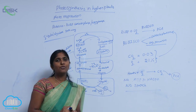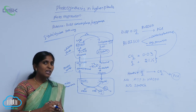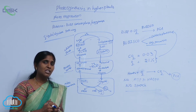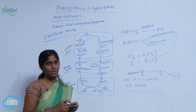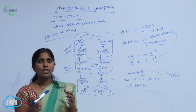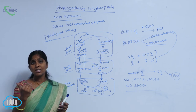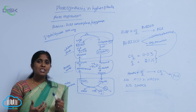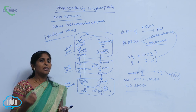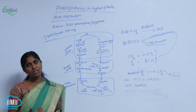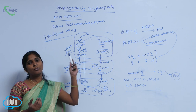In C4 plants, photorespiration is absent. Why? Because in the bundle sheath cells, the decarboxylation reaction converts malic acid to pyruvic acid — turning C4 acids into C3 acids. During this phase, CO2 is released and used for the C3 cycle. Since CO2 availability is already high in the bundle sheath cells of C4 plants, C4 plants are able to escape photorespiration.